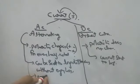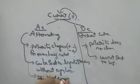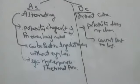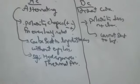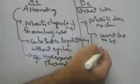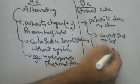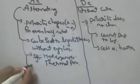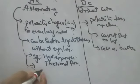What are the sources of AC current? For example: hydro power stations and thermal power stations. What are the sources of DC? Cell or battery.